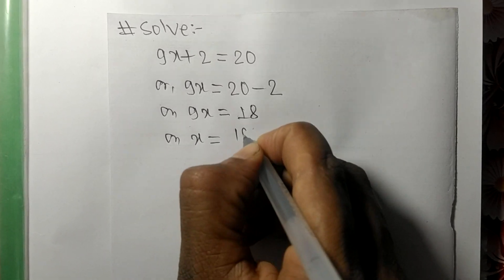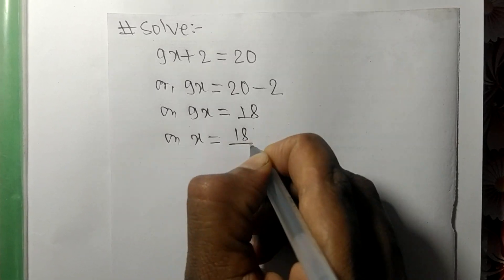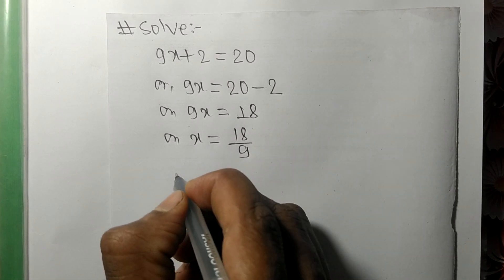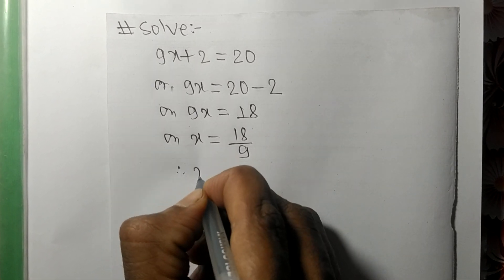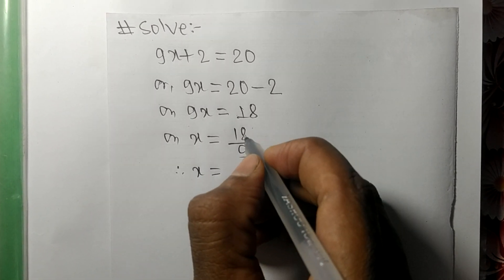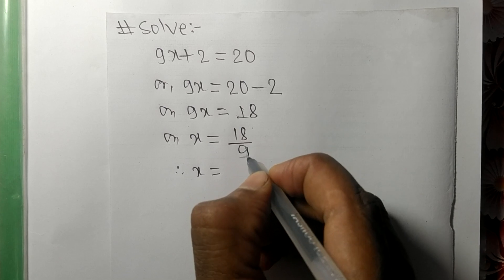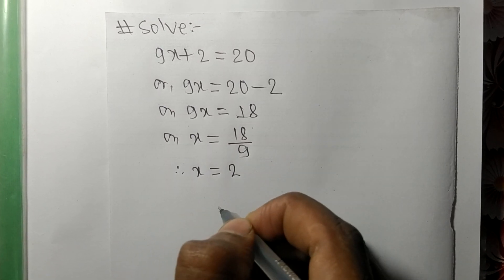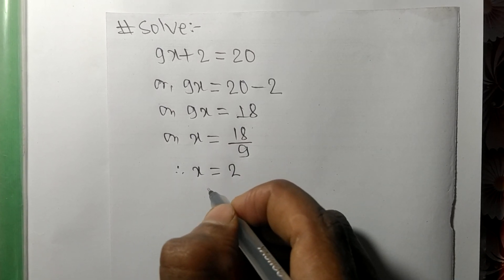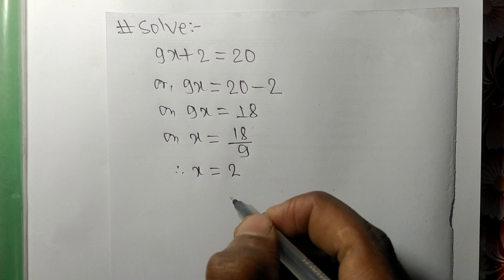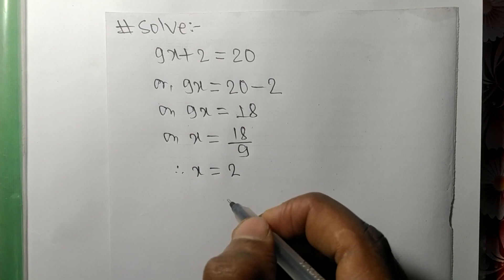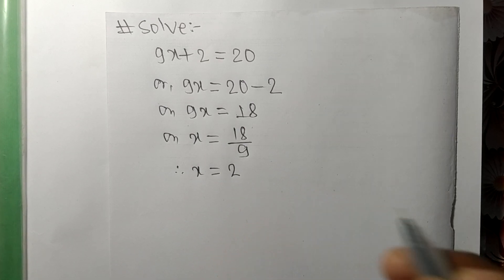So x equals 18 divided by 9, and we get x equal to 2. So 2 is the value of x. That's all for today — thanks for watching.